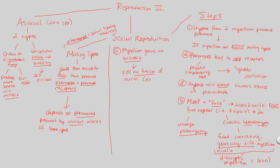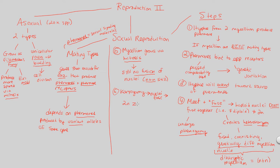Why are we not fusing these nuclei? Why aren't we combining genetic information — why are we leaving it in this weird plasmogamy N plus N state? Why don't we just go to 2N? Well, that's because in step six we will do that. We will undergo karyogamy. This is when we finally have the nuclei fuse. The nuclei will fuse, and if the nuclei do fuse, we end up with a 2N zygote.